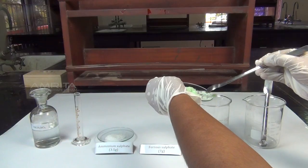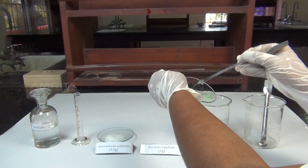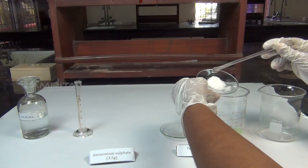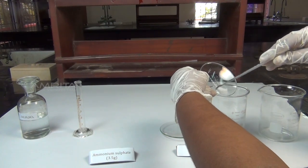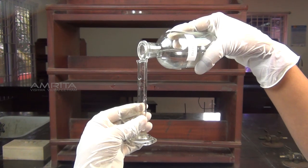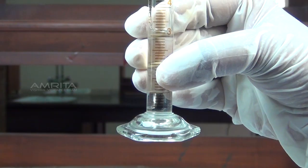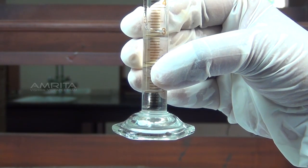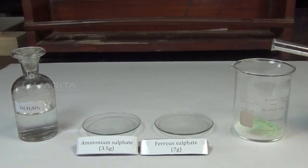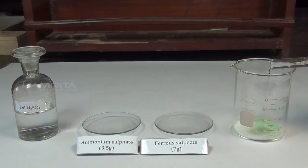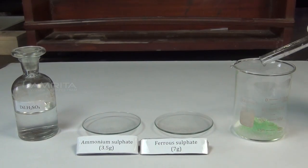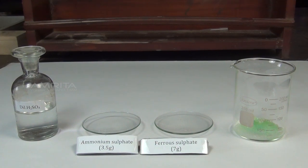Procedure: Take about 7g ferrous sulphate and 3.5g ammonium sulphate in a clean 250ml beaker. Measure about 3ml of dilute sulphuric acid in a measuring jar. Add it into the beaker containing ferrous sulphate and ammonium sulphate to prevent the hydrolysis of ferrous sulphate.